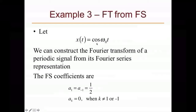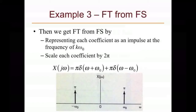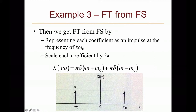Let's look at the third example. If X(t) = cos(ω0·t), the Fourier series gives a1 = a(-1) = 1/2 and a_k = 0 otherwise. We can get the Fourier transform from the Fourier series by representing each coefficient as an impulse at frequency k·ω0. There are two impulses at k = 1 and k = -1, at +ω0 and -ω0. Each impulse is scaled by 2π, so the height of each is (1/2)·2π = π. This X(jω) indicates there is only one frequency component in the signal, consistent with the Fourier series representation.